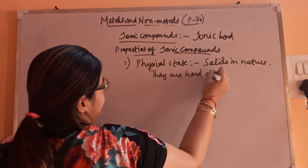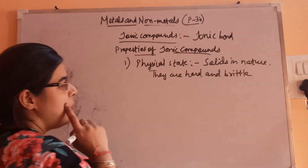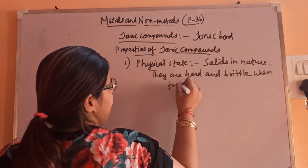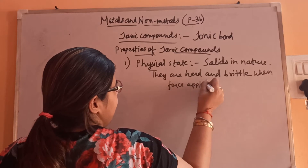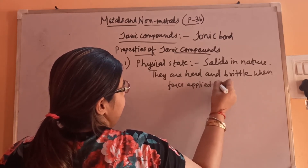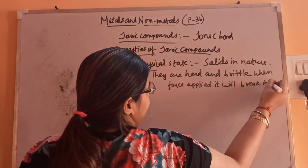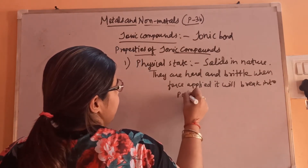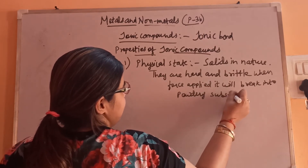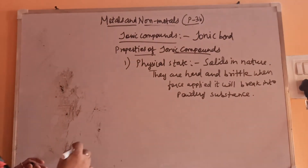They are solid and brittle. What is the meaning of brittle? Brittle means when force is applied, it will break into a powdery substance. That is brittleness. So, physical state: all ionic compounds are solid in nature.